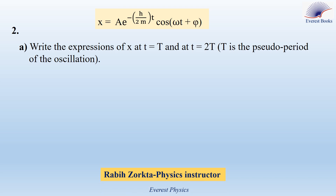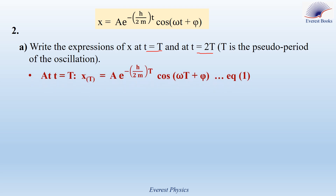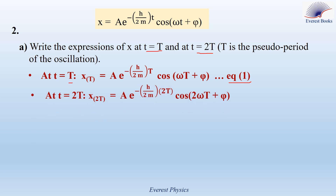Part 2a: write the expressions of x at t equal T and at t equal 2T, where capital T is the pseudo-period of the oscillation. Substituting small t by capital T: x(T) = a·e^(−hT/2m)·cos(ωT + φ), which is equation 1. Similarly, substituting small t by 2T: x(2T) = a·e^(−h·2T/2m)·cos(2ωT + φ), and since 2/2 = 1, x(2T) = a·e^(−hT/m)·cos(2ωT + φ), which is equation 2.